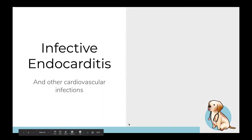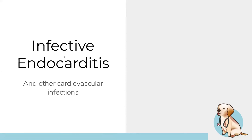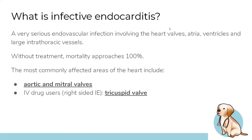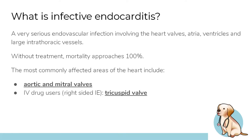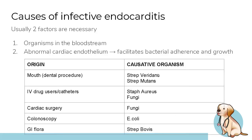Infective endocarditis is a very serious infection of the heart — mainly the heart valves, but it can also involve the atria, ventricles, and large intrathoracic vessels. It predominantly affects the aortic and mitral valves, but in IV drug users it affects the tricuspid valve — remember that as a buzzword. Mortality approaches 100% without treatment, so it's critical to pick up on this.